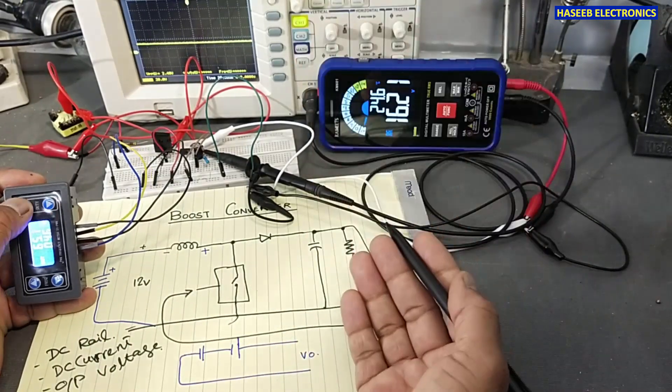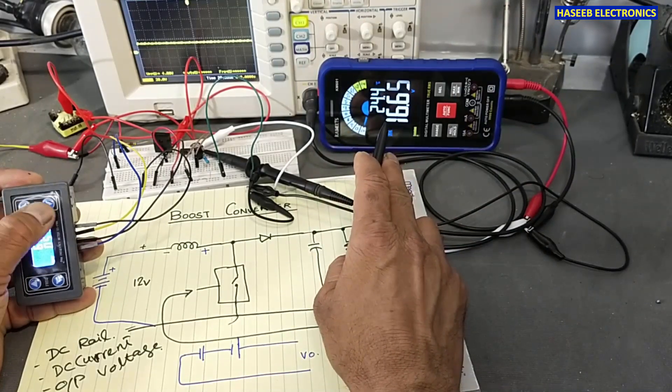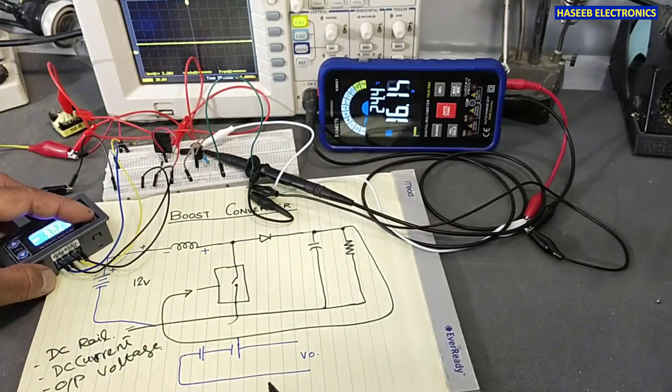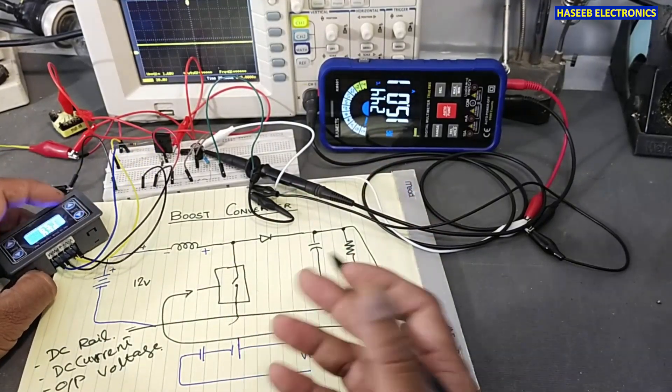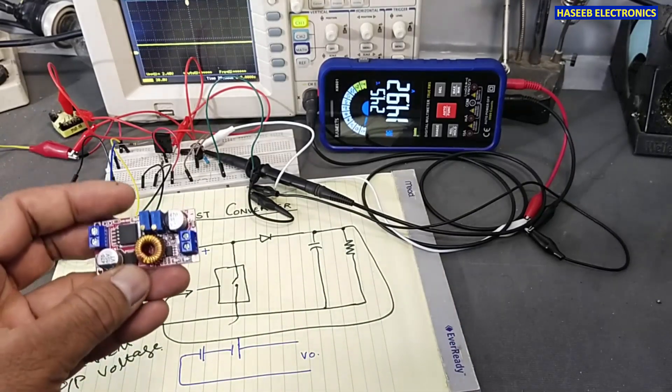It is also used in small circuits. We need 12 volts from a 5 volt source. Just a small boost converter module is connected.